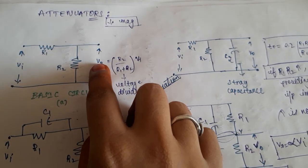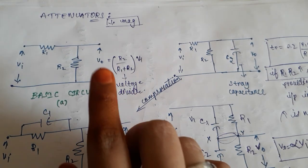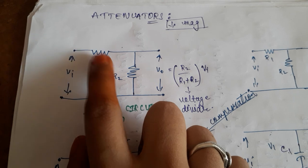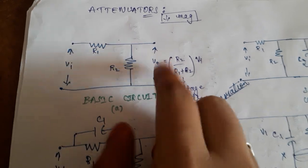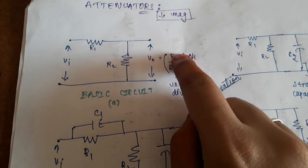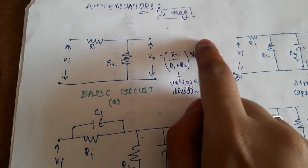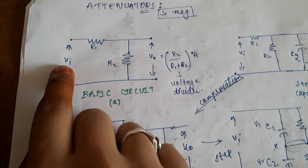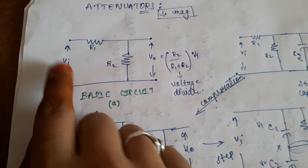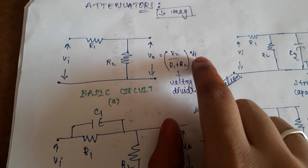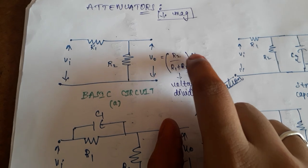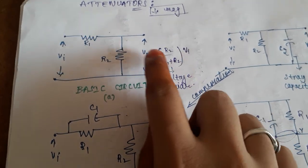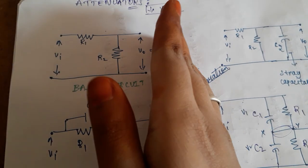This is the basic attenuator circuit, which has two resistors. The output voltage is given by V0 = (R2 / (R1 + R2)) × Vi, where Vi is the input signal. So Vi is reduced by this particular factor, and this V0 is then given as input to the amplifying stage.